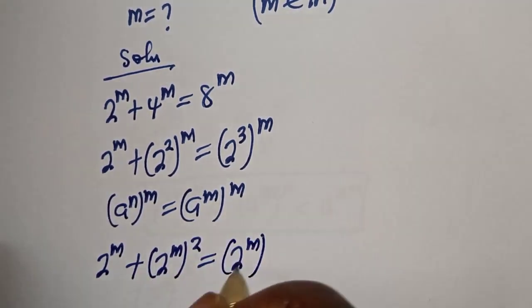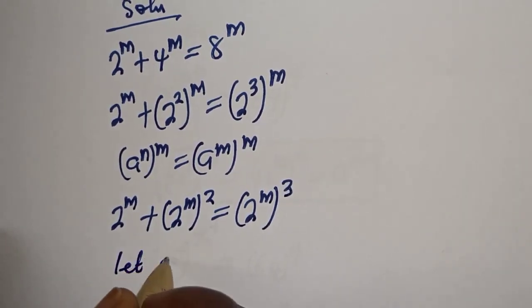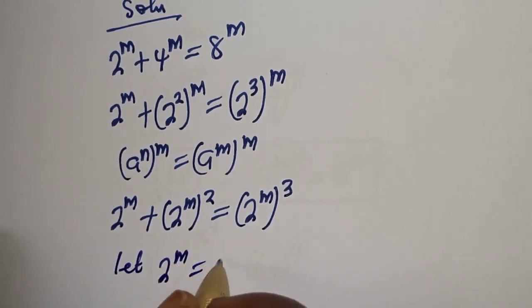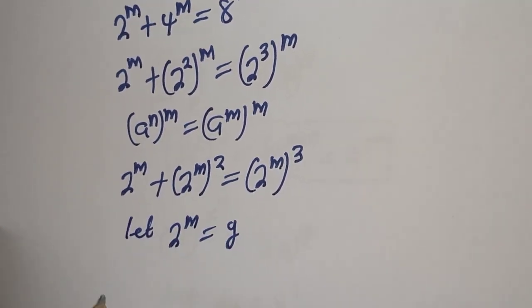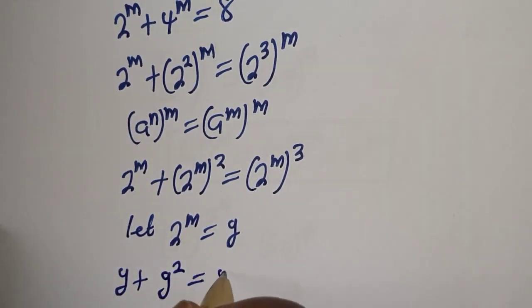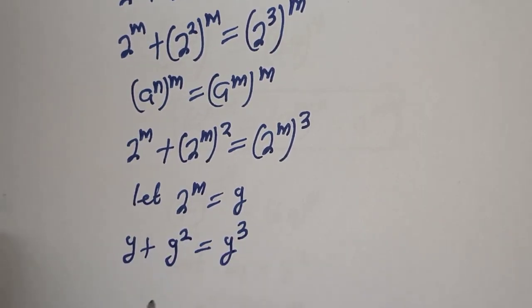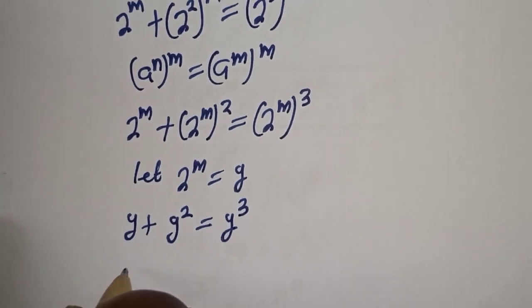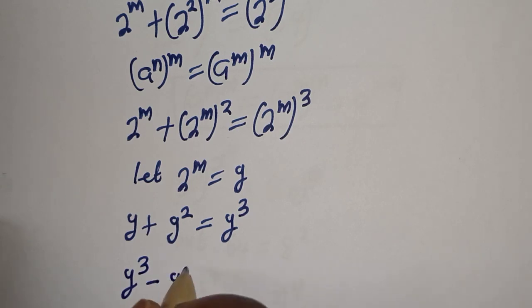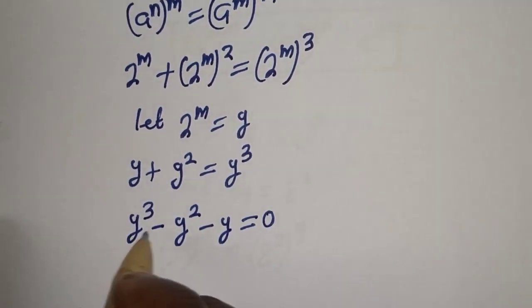Then this is 2 raised to power m plus 2 raised to power m squared, equal to 2 raised to power m raised to power 3. Let 2 raised to power m equal to y. Then rearranging gives y cubed minus y squared minus y is equal to 0.